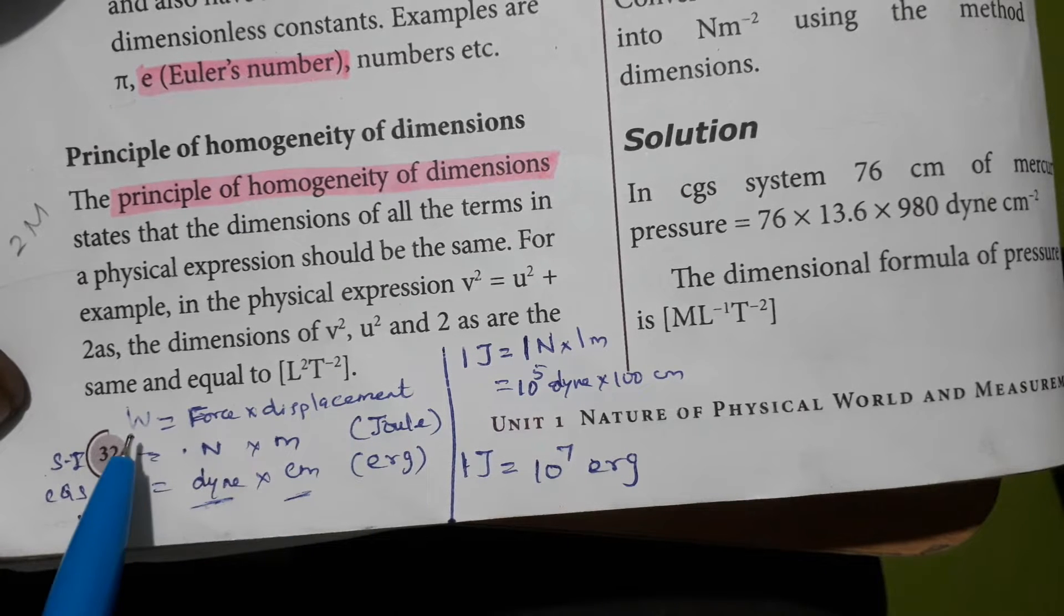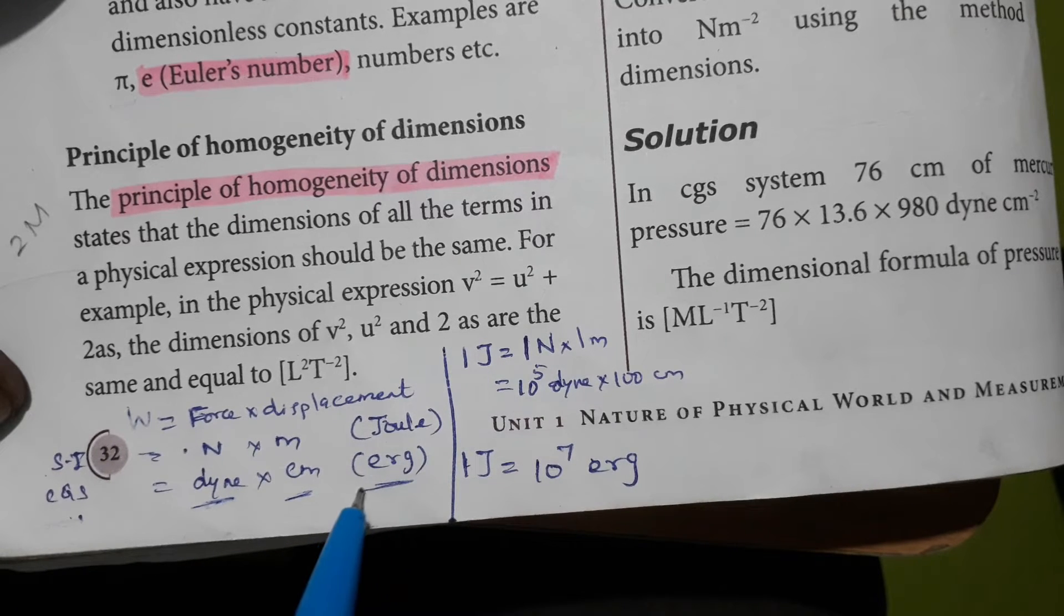So when they ask what is the unit of work in CGS system, we have to write as erg, not as Joule.